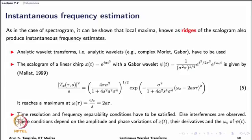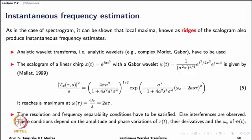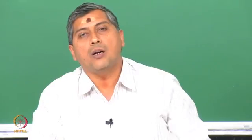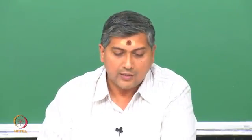This 2a·tau is nothing but the derivative of the phase of the linear chirp, which is the instantaneous frequency itself. Therefore, the points of maxima of the normalized scalogram give instantaneous frequency estimates. These are called ridges.